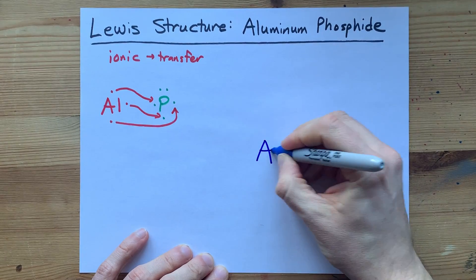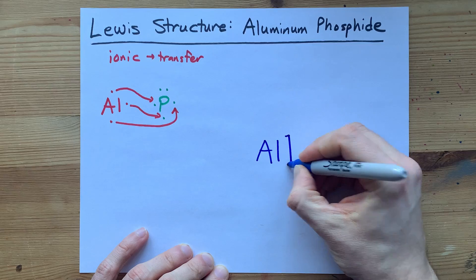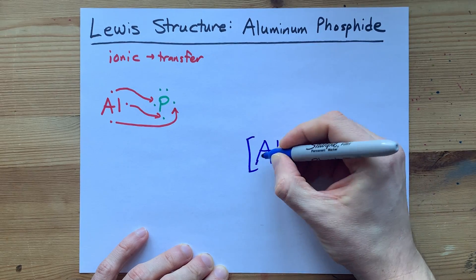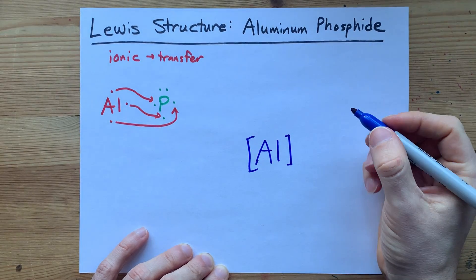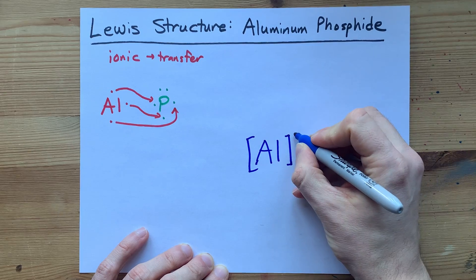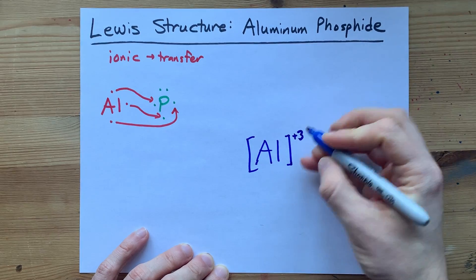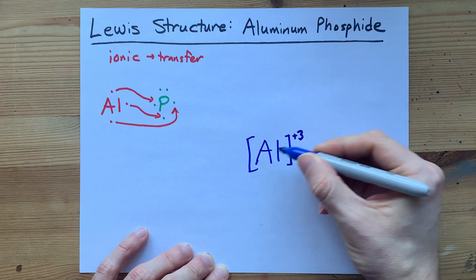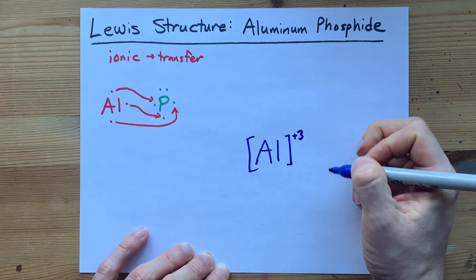To show the final structure, you draw Al with no electrons around it because it gave away all its valence electrons, and a plus three charge to represent the loss of three minus charged electrons.